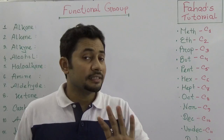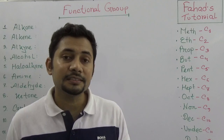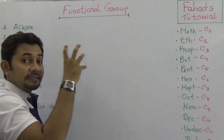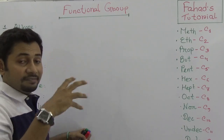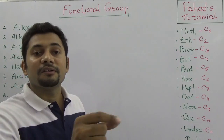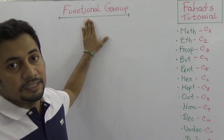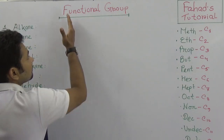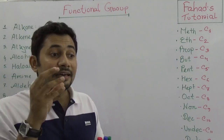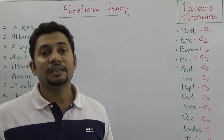Students of English, Russian, O-level, A-level — whoever is watching this tutorial — please know that the name, nature, characteristics and properties of organic compounds depend on two things: number one, the functional group, and number two, the number of carbons in the organic compound.